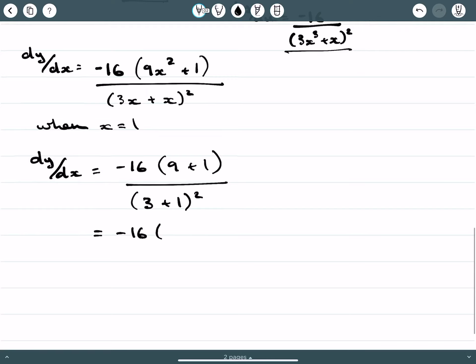If I bring this to its natural conclusion, I get negative 16 times 10 on 16. There's a nice cancellation here, and I get negative 10. That is the correct response.